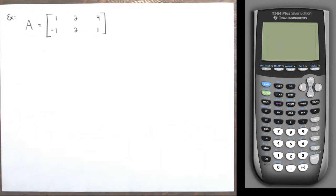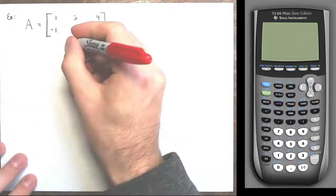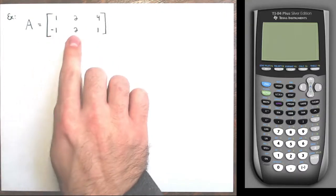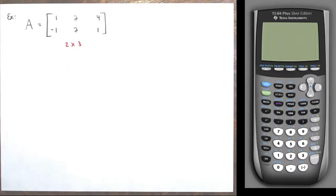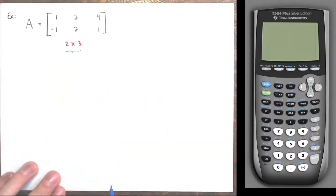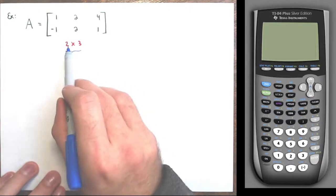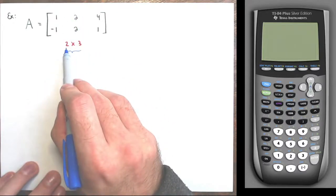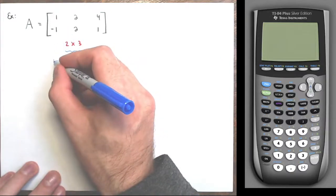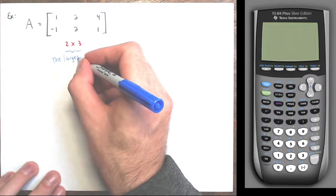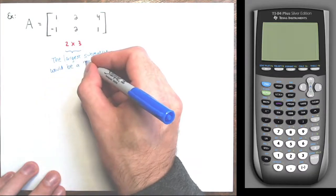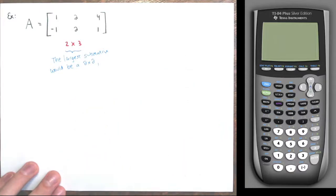The next example is a two by three matrix — two rows and three columns. This is not a square matrix, so I can't take the determinant directly. We're going to start making submatrices. The largest submatrix I could make from a two by three is a two by two — that's the largest square submatrix, so the largest order of any minor is two.